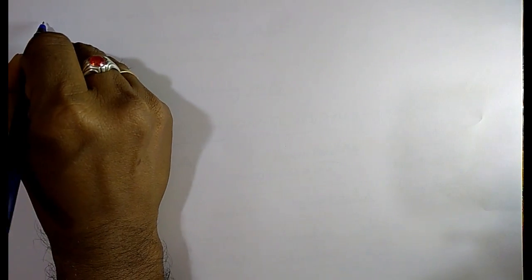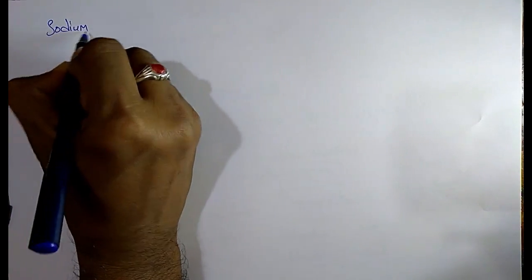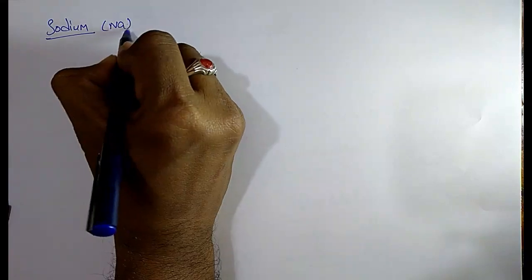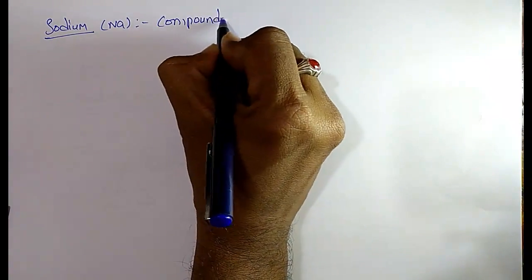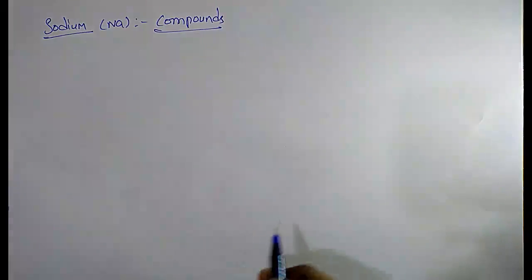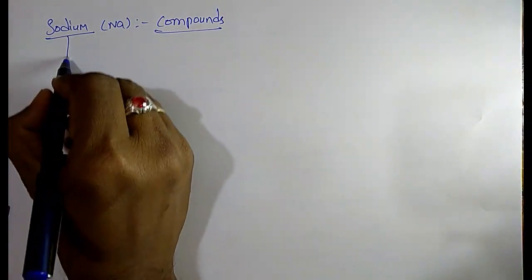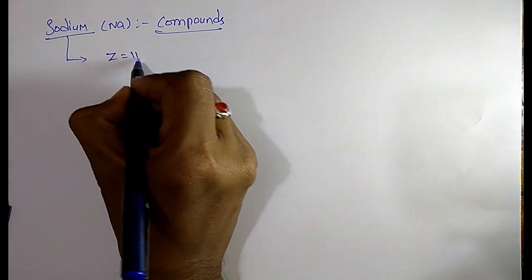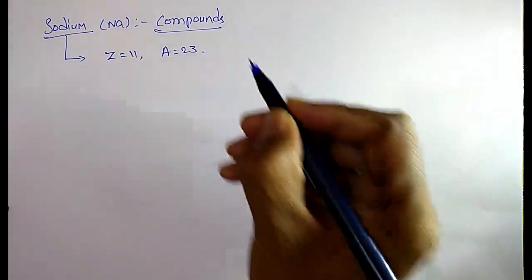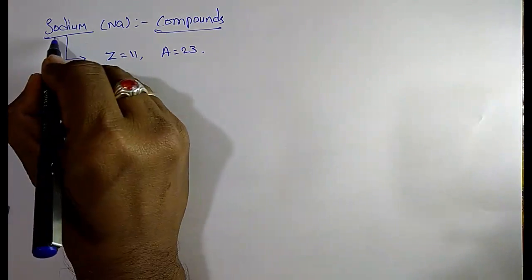Now I want to discuss each metal and their important compounds. First of all I want to take sodium (Na). Sodium and its compounds are very very important friends. In the case of sodium, the atomic number is 11 and the mass number is 23.